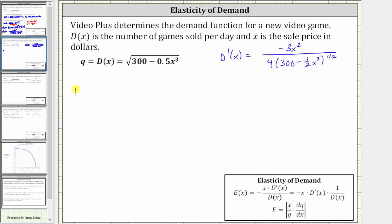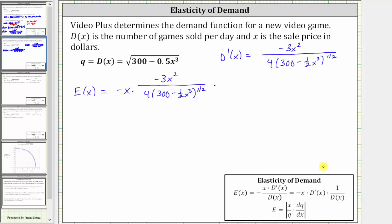The elasticity function E of x is equal to negative x times D prime of x, which is negative three x squared divided by the product of four and the quantity 300 minus one half x cubed raised to the power of one half, and then times one over D of x, which is one over the quantity 300 minus one half x cubed raised to the power of one half.